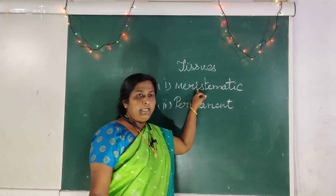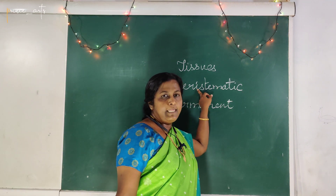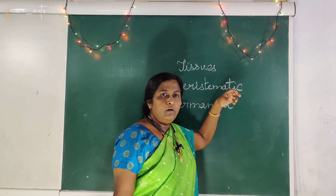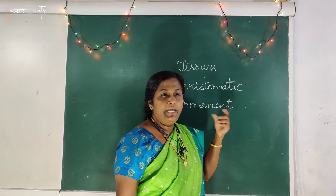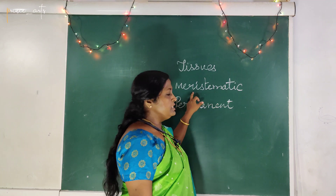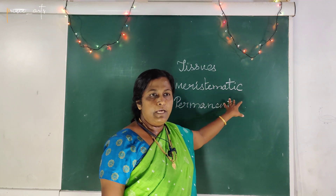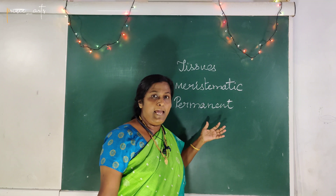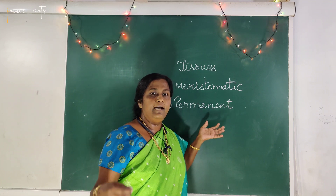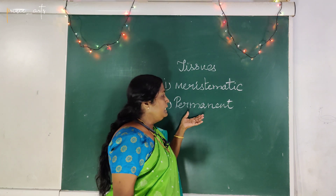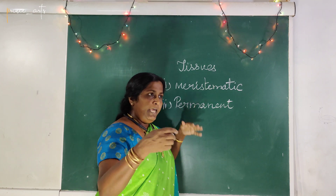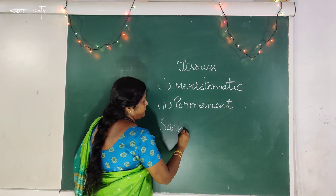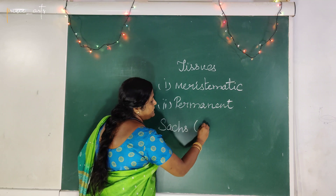Meristematic tissue is found at growing tips — plant growing tips, branch tips, leaf tips. If you take permanent tissue, those are in grown-up plants. A scientist called Sachs in 1875 classified the tissue system.